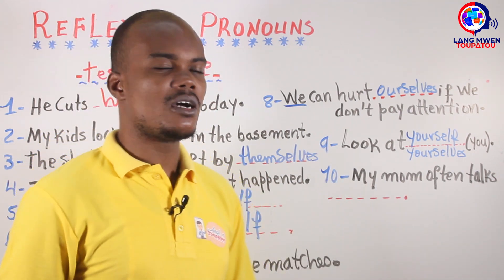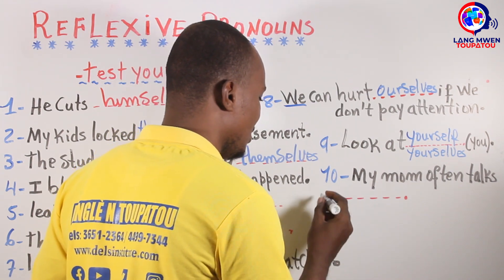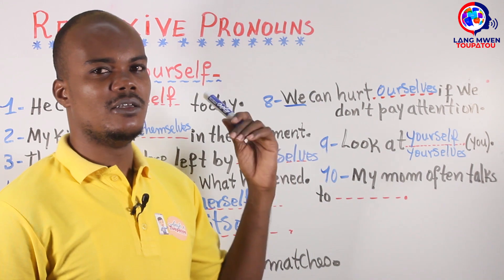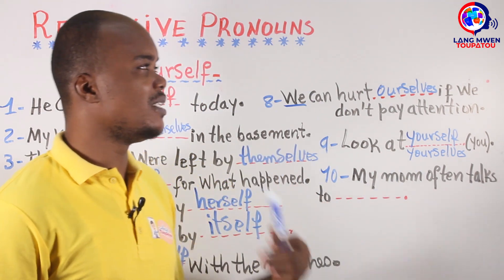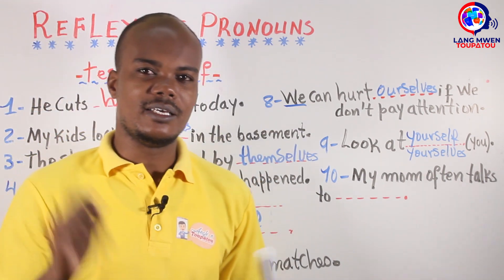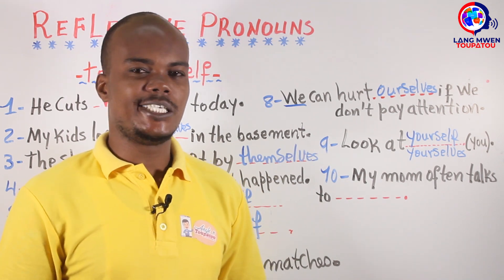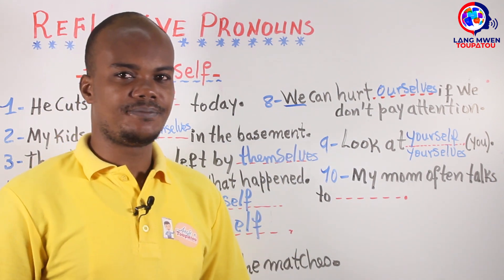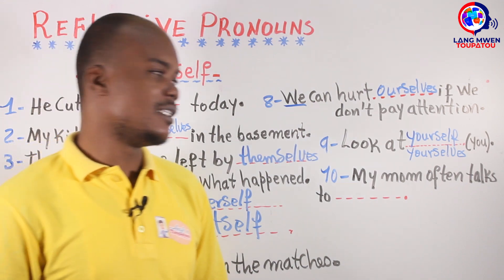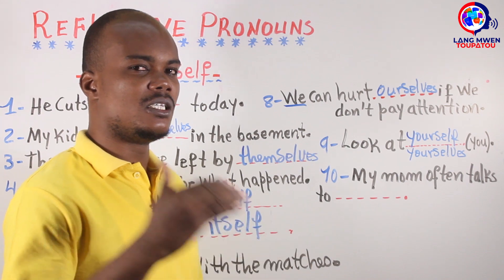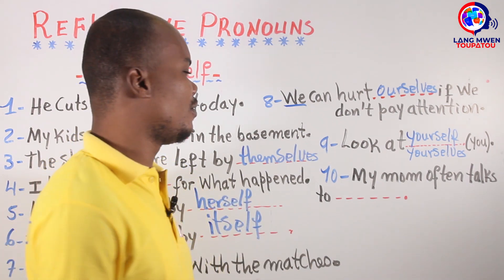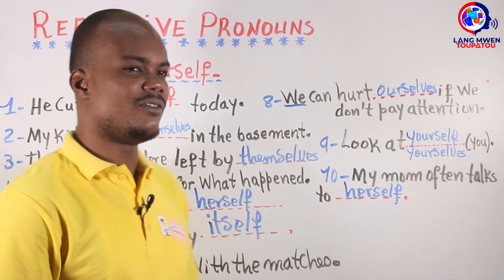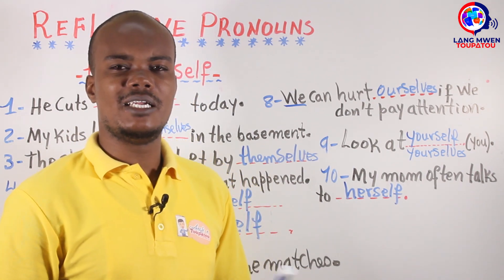And the last: 'My mom often talks to ___.' My mom is the subject. When you replace 'my mom' by a subject pronoun, you get 'she.' The reflexive pronoun for 'she' is 'herself.' So: 'My mom often talks to herself.'